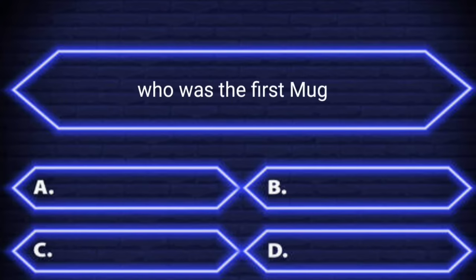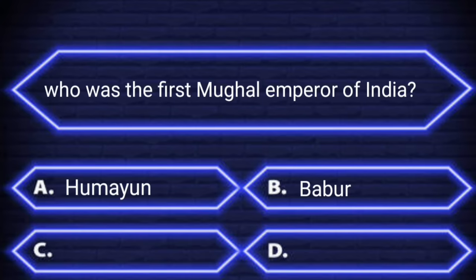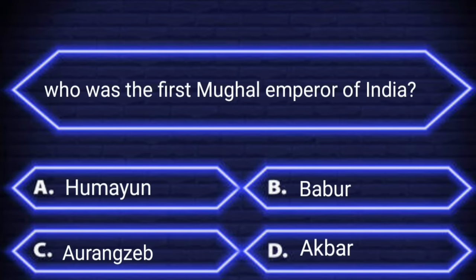Who was the first Mughal Emperor of India? A: Humayun. B: Babar. C: Aurangzeb. D: Akbar. Your time starts now.